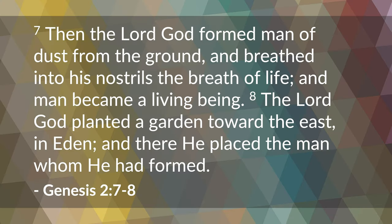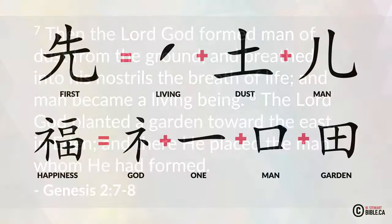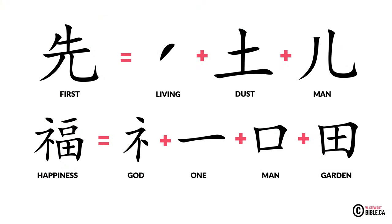The next character is the word for 'first.' From Genesis chapter 2, verses 7 to 8: 'The Lord God planted a garden toward the east in Eden, and there He placed the man whom He had formed.' The character for 'first' is a combination of the small hash mark meaning 'living,' plus 'dust,' plus 'man.' The living dust that is man — all those characters put together mean 'first.' We're looking at the first man, placed in a garden.